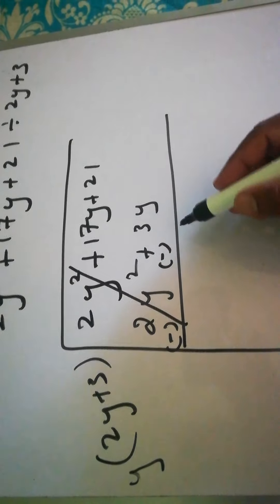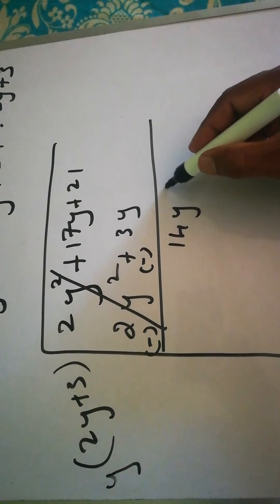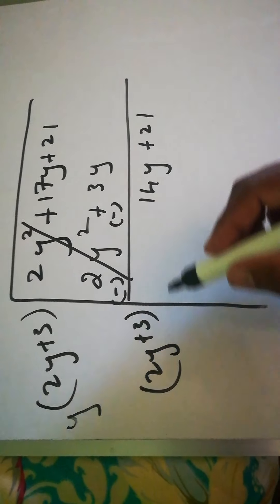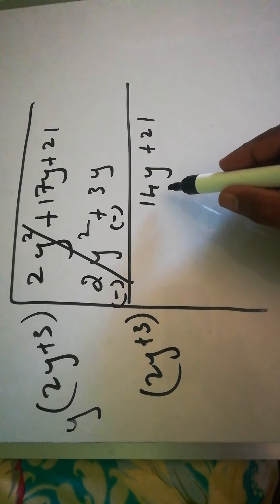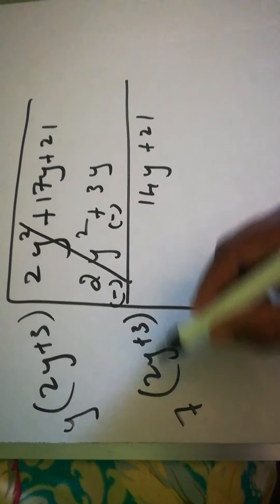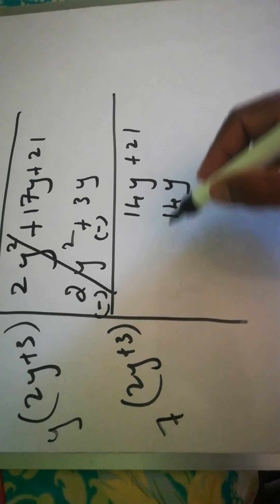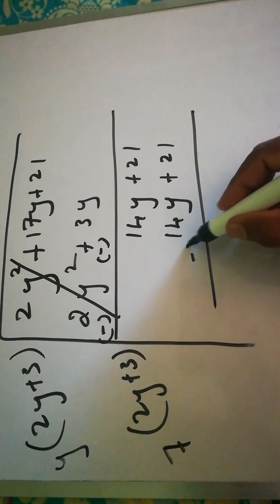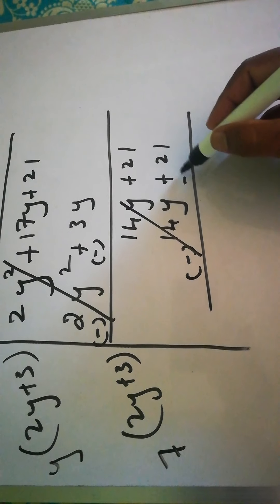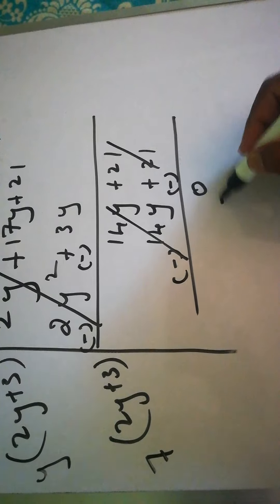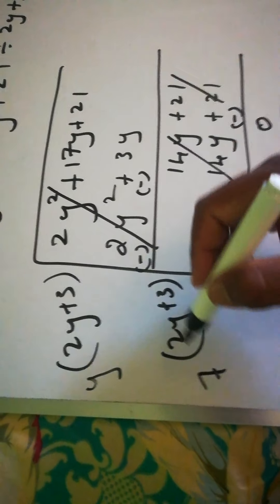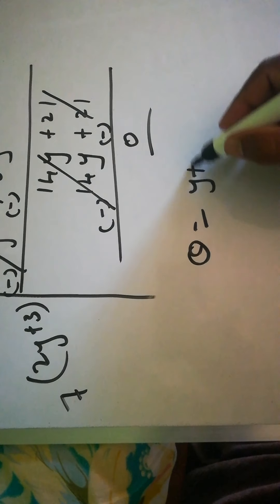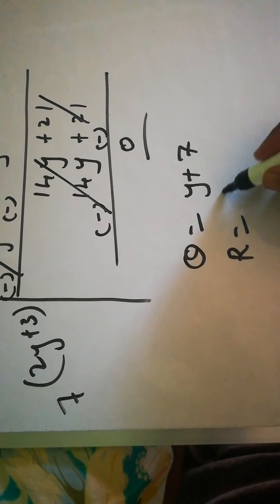After cancellation, 17 minus 3 gives 14y, plus 21. Bring down 2y + 3. To get 14y we multiply by 7: 7 times 2 is 14, and 7 times 3 is 21. Change the sign — plus becomes minus — and everything cancels. Therefore, the quotient is y + 7 and the remainder is 0.